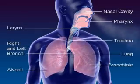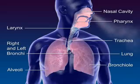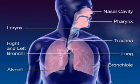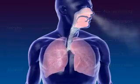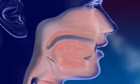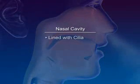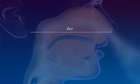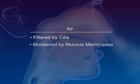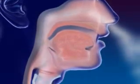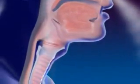The respiratory system moves air through the nose, pharynx, larynx, trachea, and bronchus to the alveoli, where gas exchange between oxygen and carbon dioxide occurs. Nares are the openings to the nose. The nasal cavity is lined with cilia, mucous membranes, and blood capillaries. The air is filtered by cilia, moistened by mucous membranes, and warmed by the blood.